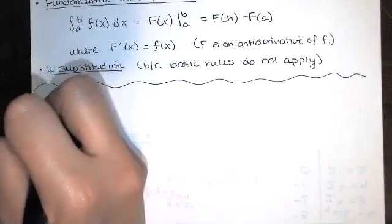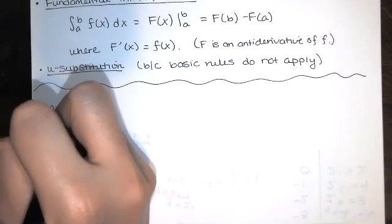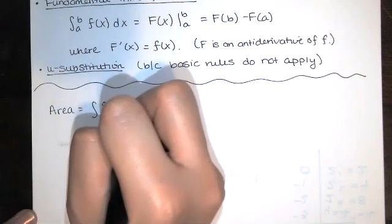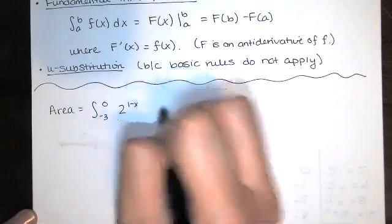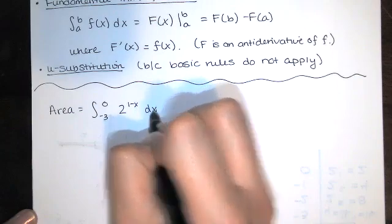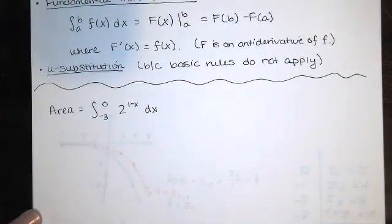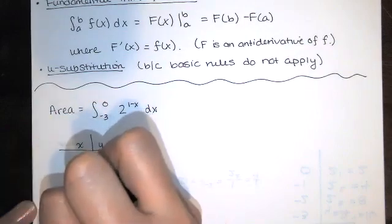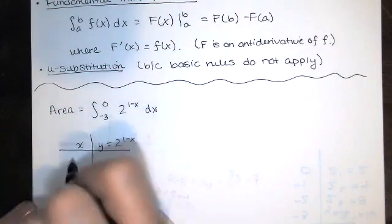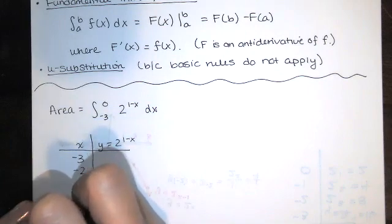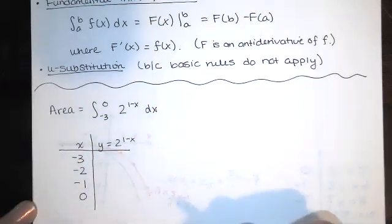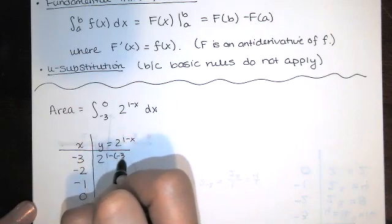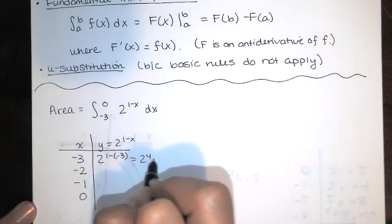Let's find the picture that's representing that area because this is area under the function given by y=2^(1-x) between x=-3 and zero. I'm just going to make a simple t-chart in order to do that. And I'll let x equal negative three, negative two, negative one and zero.